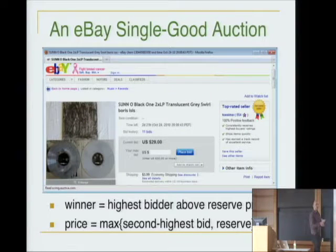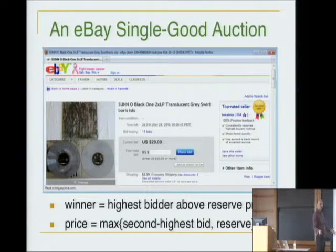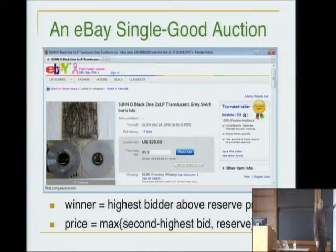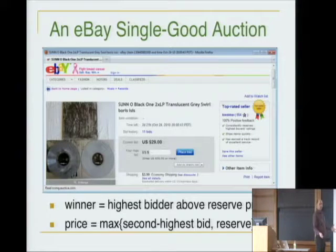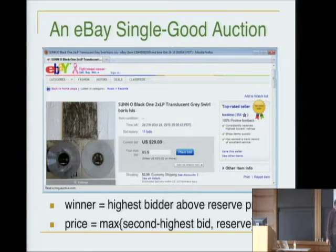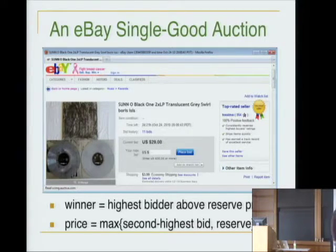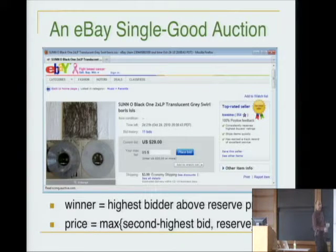In lieu of defining incentive-compatible mechanisms generally, let me focus on specific examples. Start very simply: single item auction. There's a seller with one thing to sell and a bunch of potentially interested buyers. The seller has a vinyl record and must figure out: first, which buyer if any gets the good, and second, what they pay. One possible solution is a second-price auction, which is more or less what happens on eBay — you input a bid saying what you'd be willing to pay.